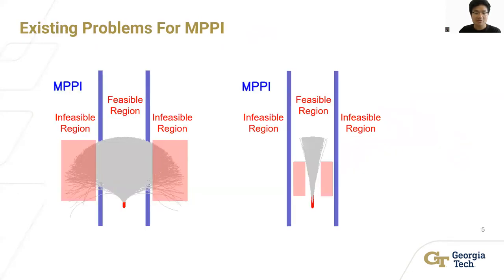There are some problems with the MPPI controller. If you inject a large Gaussian noise, much computational power will be wasted in infeasible regions, while if you inject a relatively small noise, the infeasible region is not explored well enough to generate an optimal trajectory.